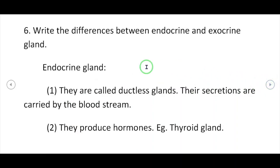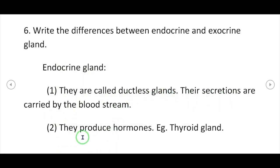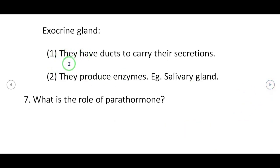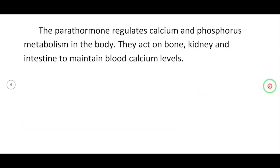Question 6: Differences between endocrine and exocrine glands. Endocrine glands are called ductless glands; their secretions are carried by the bloodstream; they produce hormones — example: thyroid gland. Exocrine glands have ducts to carry their secretions; they produce enzymes — example: salivary gland. Question 7: Role of parathormone — it regulates calcium and phosphorus metabolism in the body, acting on bone, kidney and intestine to maintain blood calcium levels.